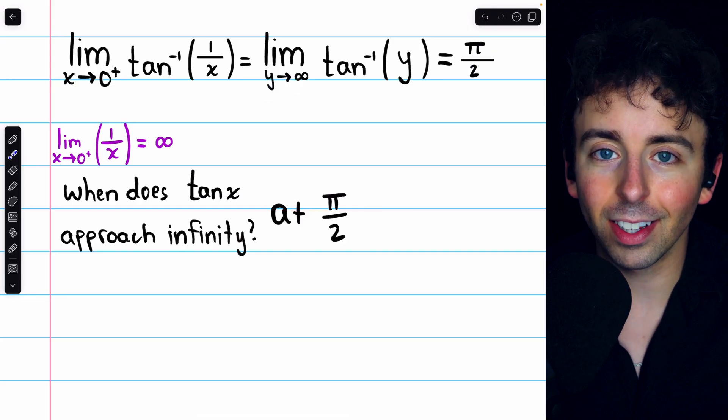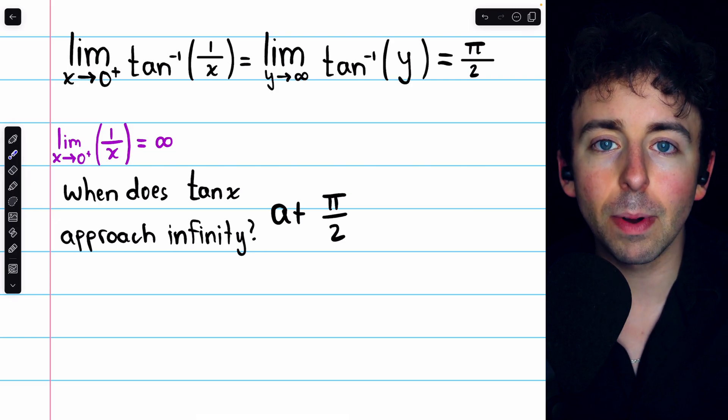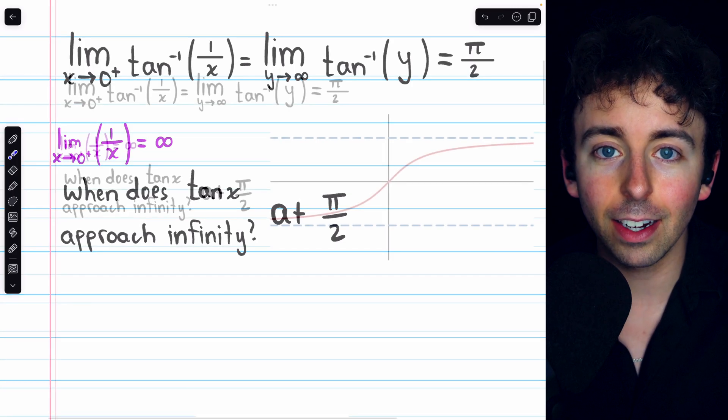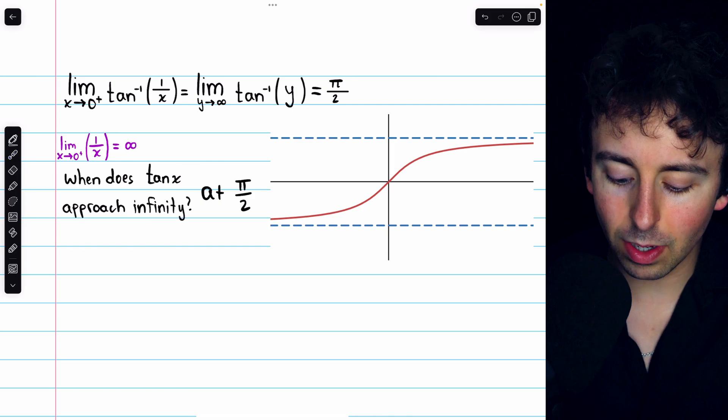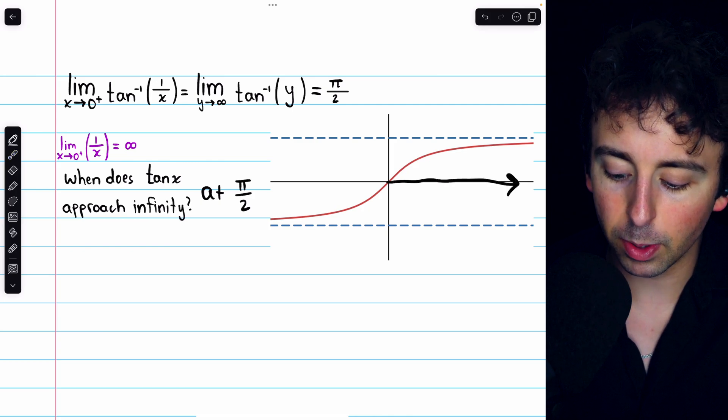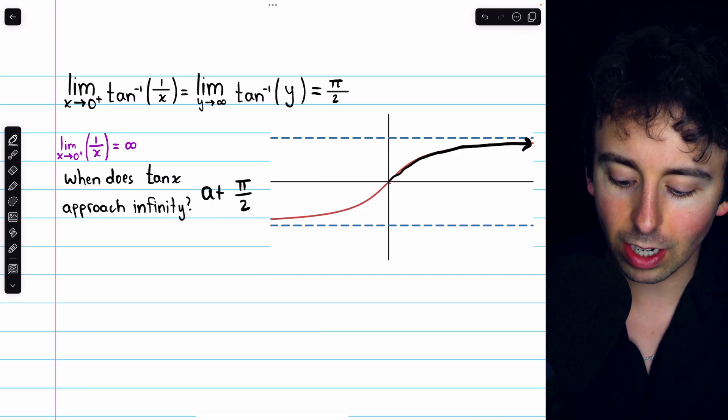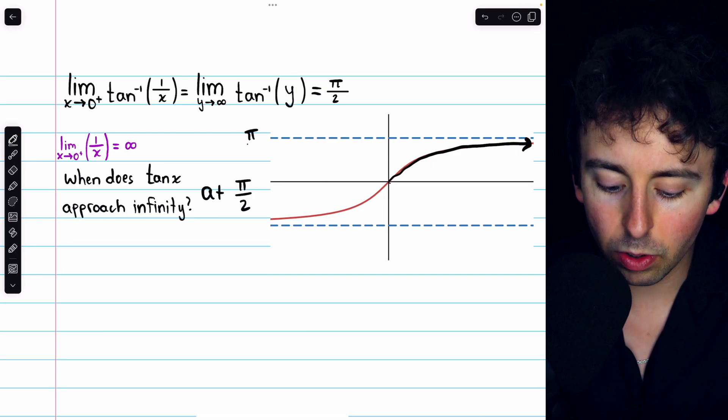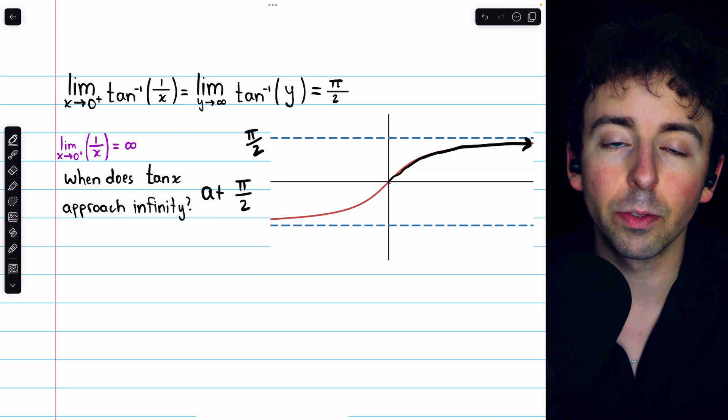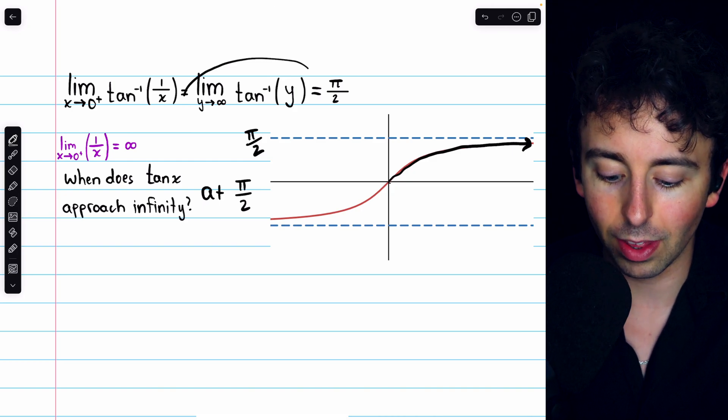This is a horizontal asymptote, which we can see by looking at the graph of arctan. Here's the graph of arctan, and you can see as the independent variable goes to positive infinity, the arctan function is approaching a horizontal asymptote, which just so happens to be π over 2, as we verified with this limit.